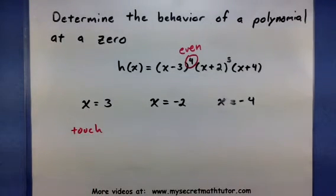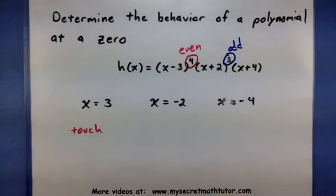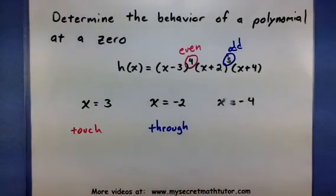If we look at the next factor, it has an odd power. Therefore, this one is just going to go through at that zero.